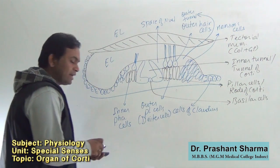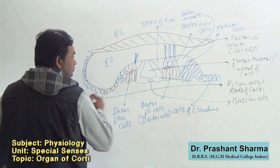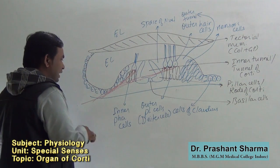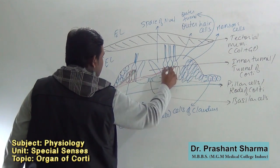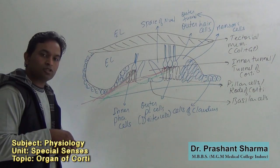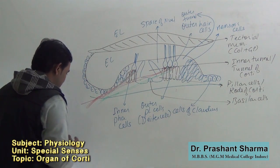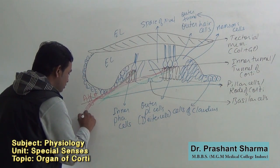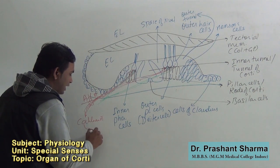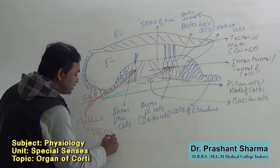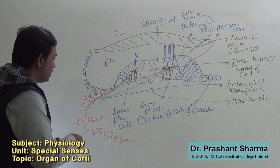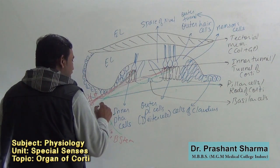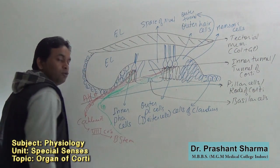The afferent and efferent neurons originate from here. The afferent neurons enter a separate sheath to form the cochlear nerve. This cochlear nerve enters the eighth cranial nerve, that is the auditory cranial nerve, which reaches the brain stem. From the brain stem, specifically the superior olivary nuclei, the efferent fibers originate, enter the sheath, and distribute to the different types of hair cells.